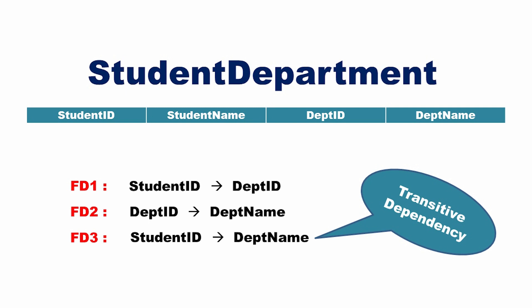In other words, department name is transitively dependent on student ID via the attribute department ID.